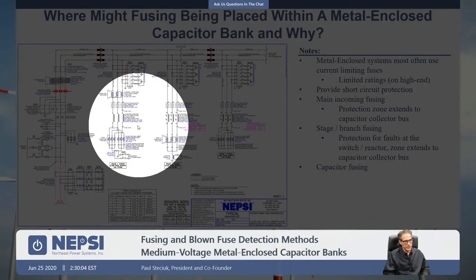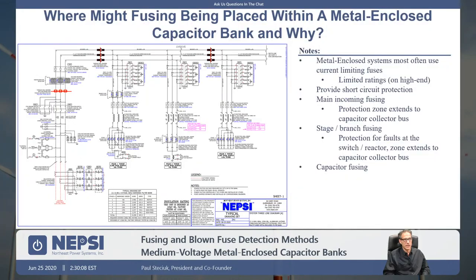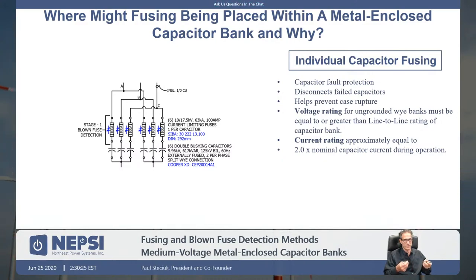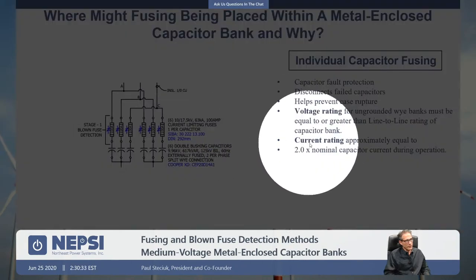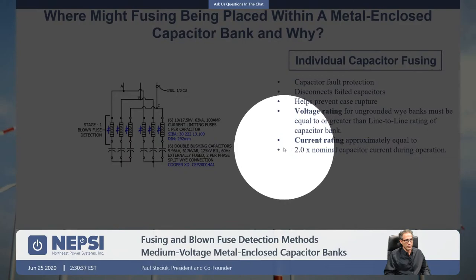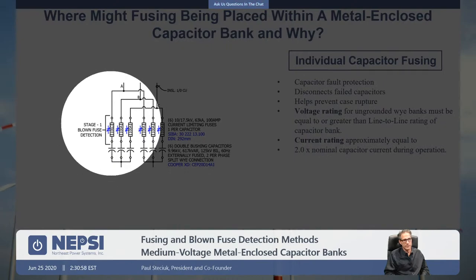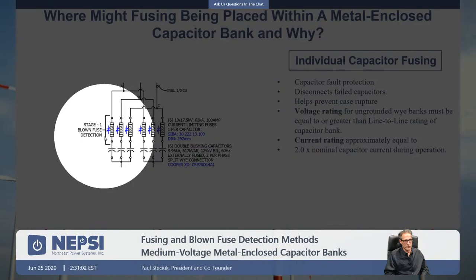Moving on to capacitor fuses — each and every capacitor gets its own fuse, mounted on or next to the capacitor terminals. The SIBA fuses that NEPSI utilizes are clip-mounted fuses, which is a very nice feature: no tool is required to remove and replace the fuse. For rating, we multiply by a factor of 2.0. We do that because there's a transient inrush associated with capacitor switching, and we're concerned about what each fuse will see during the switching event. At smaller fuse ratings, the possibility of fuse operation due to transient inrush current increases.